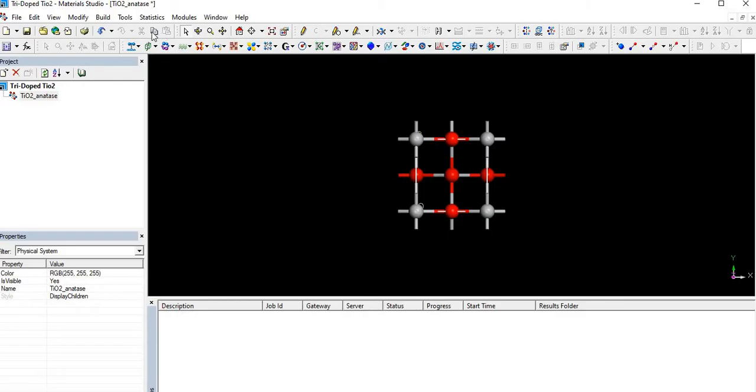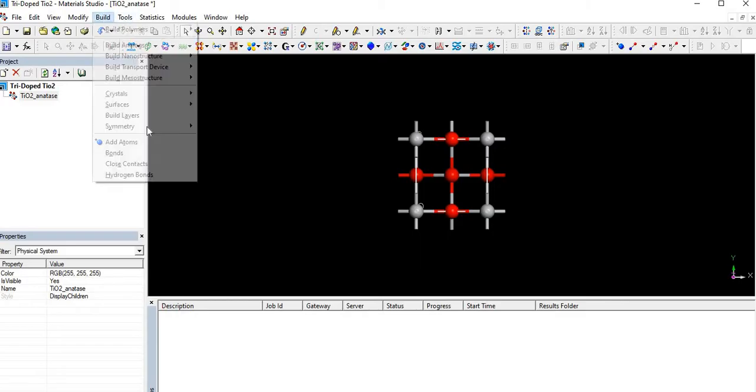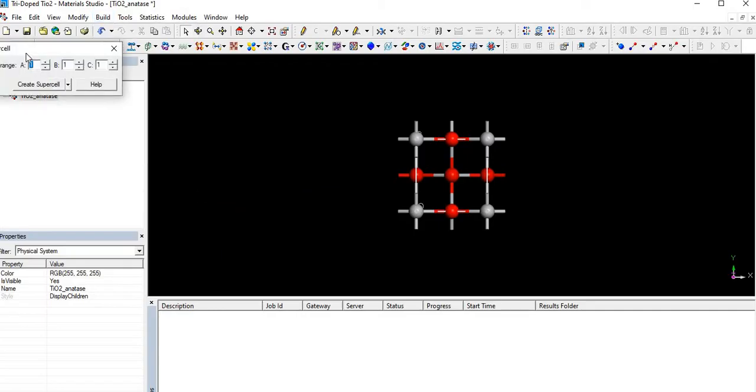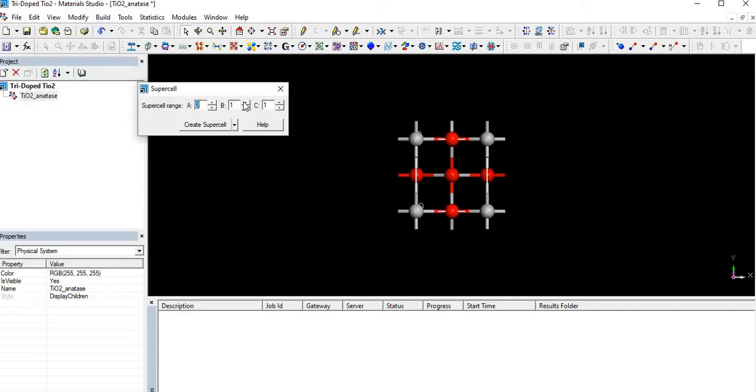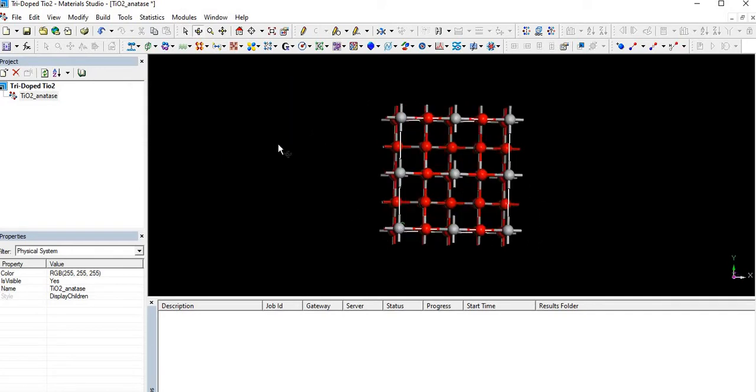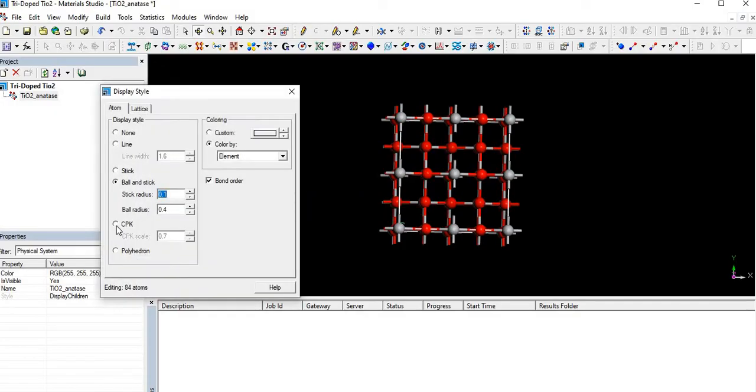This structure is a supercell of TiO2, so we have to replicate the structure. For this, we have to make a supercell of about 2×2×1. It's a supercell now.